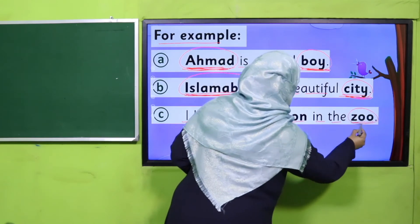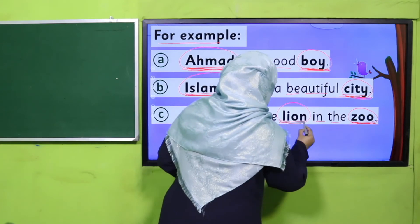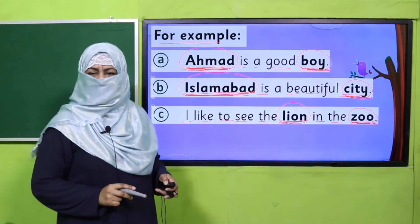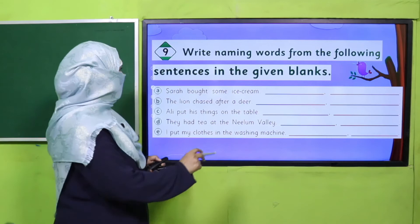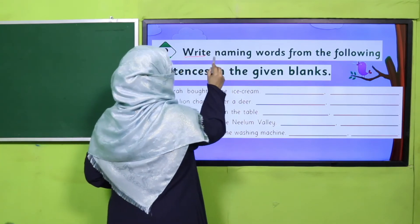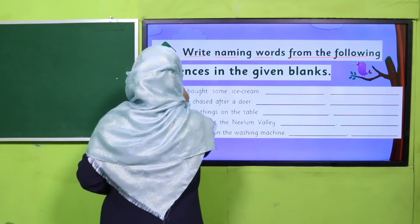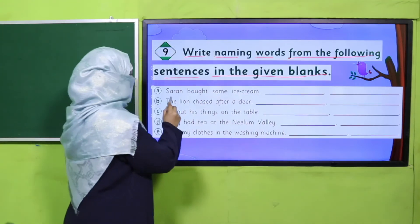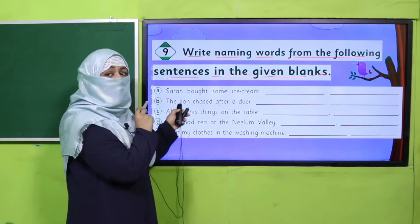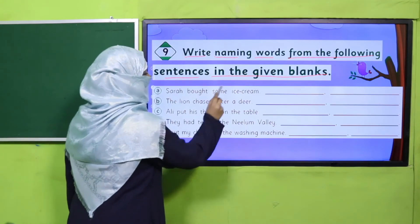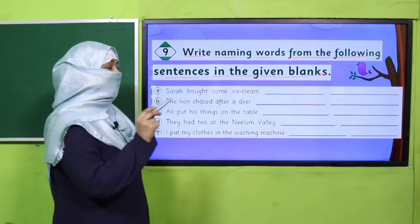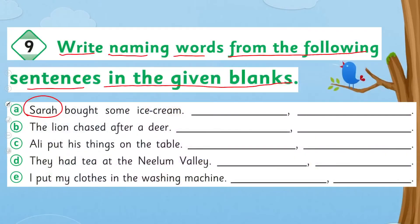Here is a practice exercise in your book. Open your book. What you are supposed to do: write naming words from the following sentences in the given blanks. You will read the sentence and write whatever nouns are there. For example, 'Sarah bought some ice cream' — there are two nouns: Sarah and ice cream. Write both nouns in the given space. Pause the video and complete this exercise in your book.